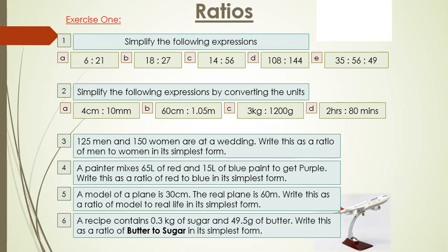After you've done that, I'd like you to solve the following problems. 125 men and 150 women are at a wedding. Write this as a ratio of men to women in its simplest form. And number 4, a painter mixes 65 litres of red and 15 litres of blue paint to get purple. Write this as a ratio of red to blue in its simplest form. And number 5.